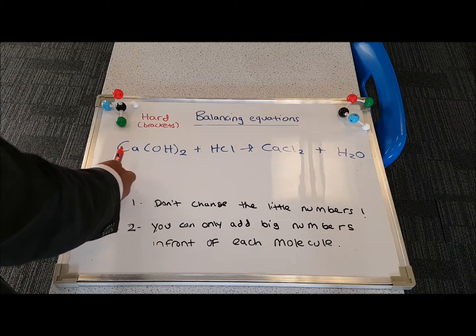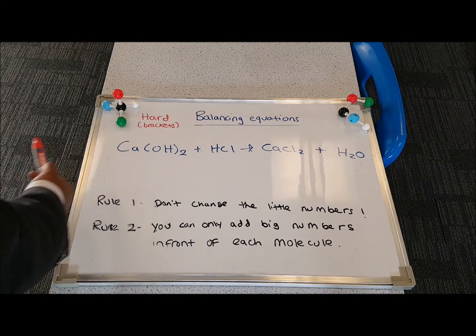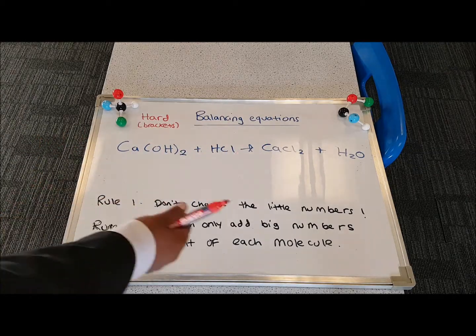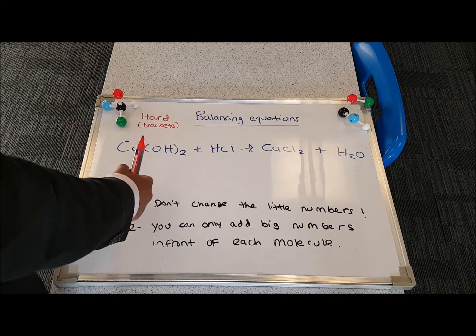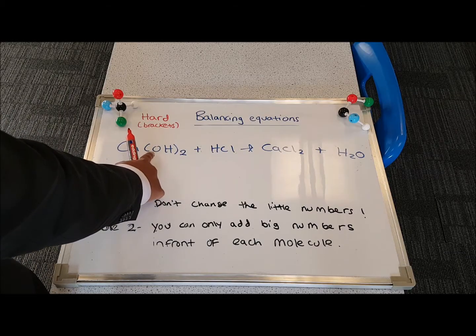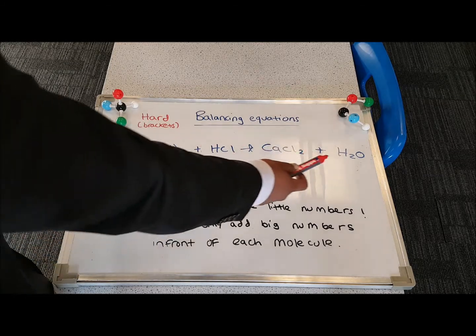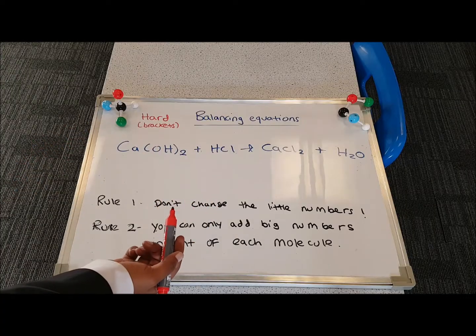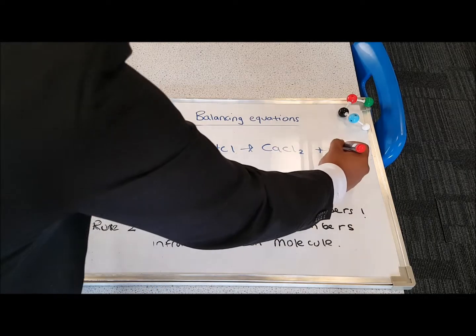I'm going to start off with the calciums. There's 1 calcium on the left, 1 calcium on the right. So that's balanced. If you look at the number of oxygens on the left, there are 2. There's 1 on the right. So immediately that's unbalanced. I'm going to try and put a 2 over here. So now I have 2 oxygen atoms on both sides.